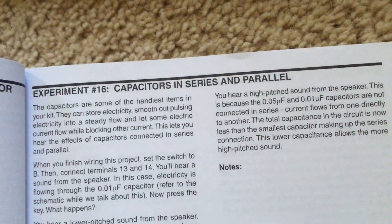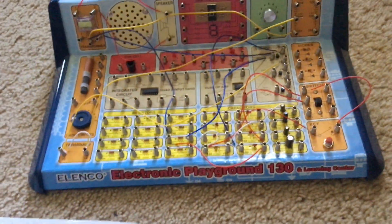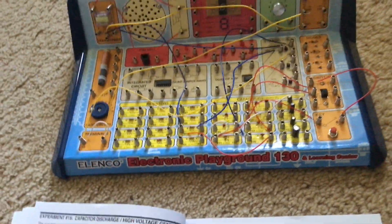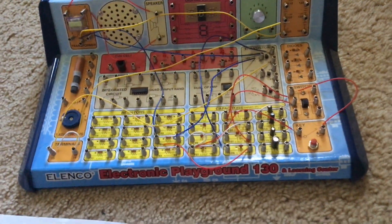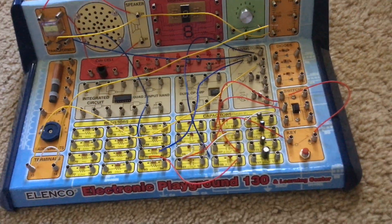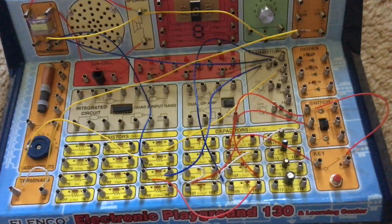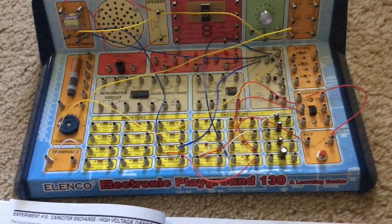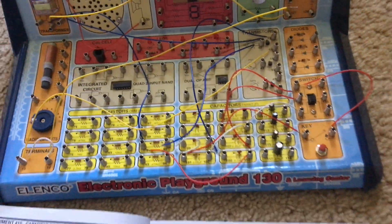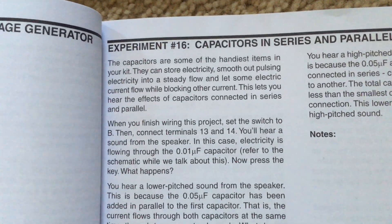Experiment 16 I can demonstrate. It is capacitors in series and parallel. Capacitors are some of the most useful components in this kit and they allow electricity to be stored and released. They also enable a steady flow of power and block other current so that you can hear the effects of capacitors connected in series and parallel.